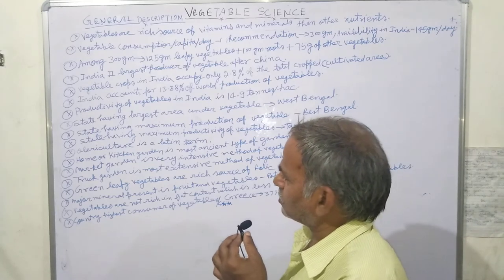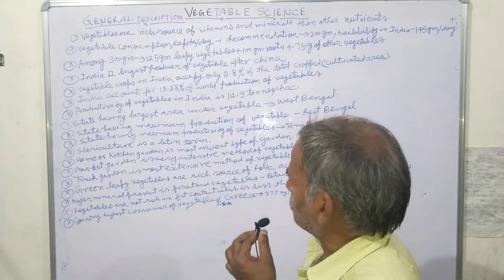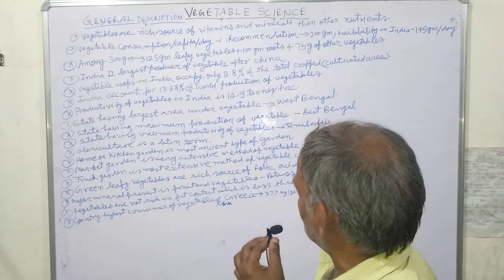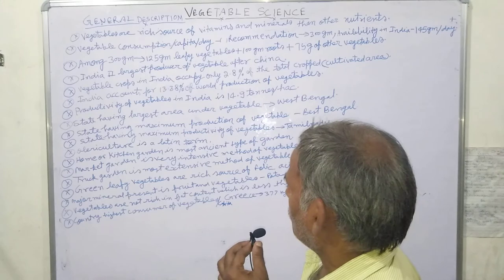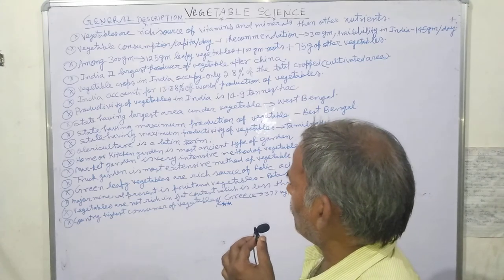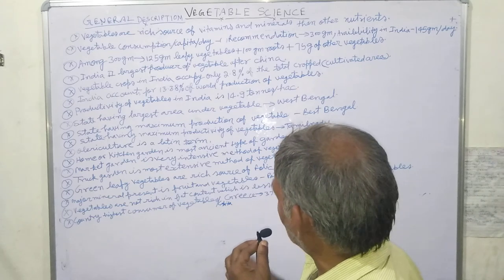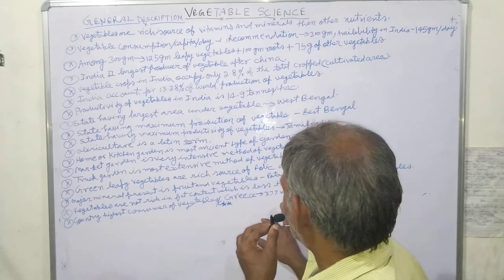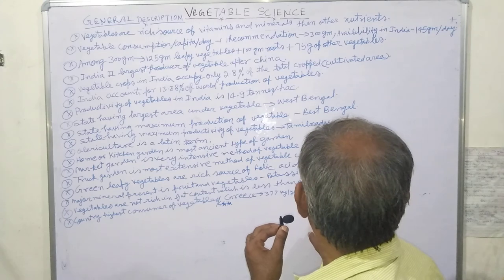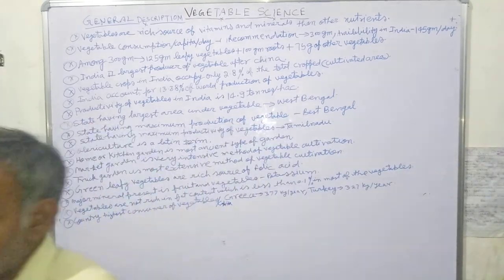The highest per capita consumption of vegetables is in certain countries. Number one is AB.